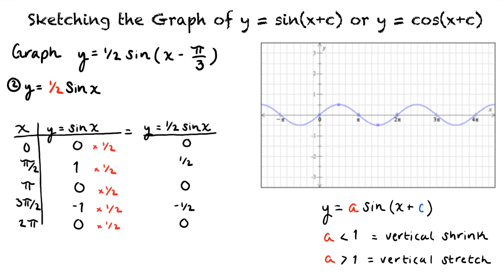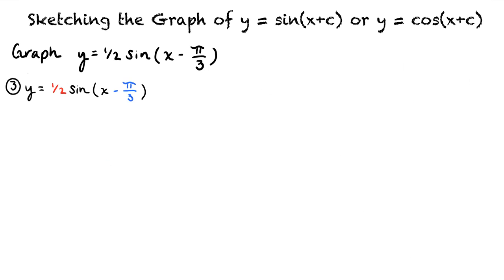Our next and final step is to graph y equals one-half sine of x minus pi over 3. Note that we no longer are taking the sine of the angle of x, but of x minus pi over 3. So to get the key points for this graph, we want the angle x minus pi over 3 to equal 0, pi over 2, pi, 3 pi over 2, and 2 pi.